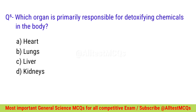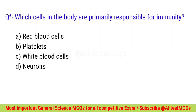Question number five: Which organ is primarily responsible for detoxifying chemicals in the body? Right option is C — Liver. Question number six: Which cells in the body are primarily responsible for immunity? Correct option is C — White blood cells.